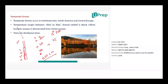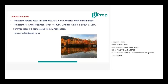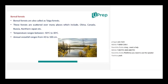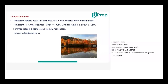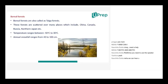Ma'am, you said something about a quiz today. We'll have the quiz once all of you finish the recap. Ma'am, I didn't understand what deciduous means. Deciduous means the leaves fall off every year — fall off annually. Correct.